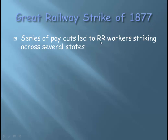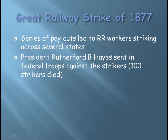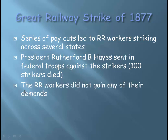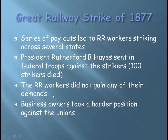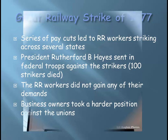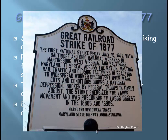There are four major strikes to know. The Great Railway Strike of 1877: a series of pay cuts caused railroad workers to go on strike across several states, which shut down the railroad industry. President Rutherford B. Hayes sent in federal troops against the strikers — they beat them down and told them to go back to work. Over 100 strikers died. The railroad workers did not gain any of their demands — no more money, no shorter workday. They got a kick from the government and were told to go back to work. Business owners had the backing of the government.